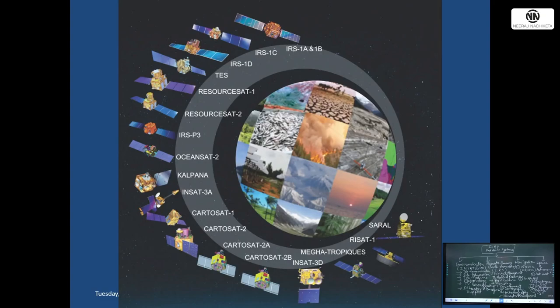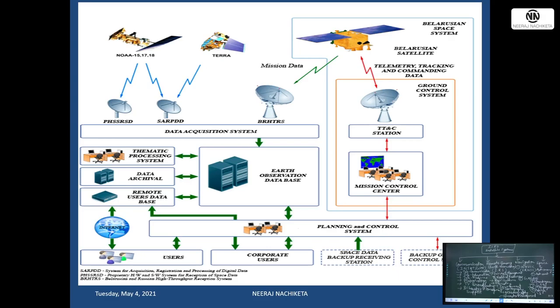SARAL - Satellite with ARgos and ALtiKa - is a joint India-France satellite for studying ocean depth and marine resources. Remote sensing satellites work by receiving signals and sending data back to ground stations via dish antennas. The antenna sends data to servers, then computers where agriculture, forest, and all remote sensing data are analyzed using software.